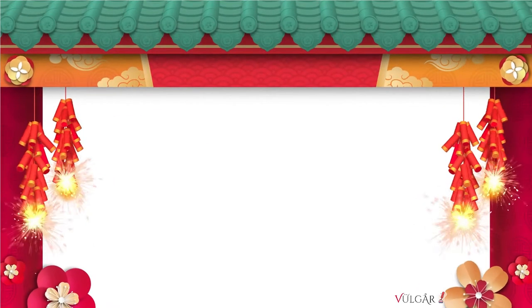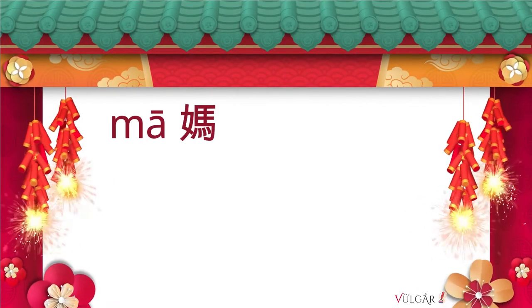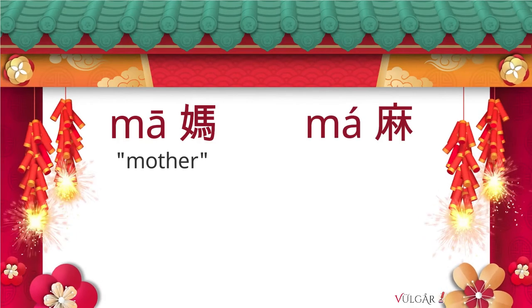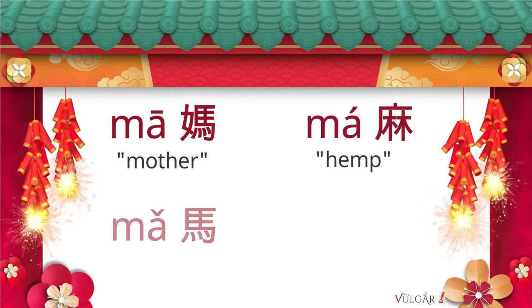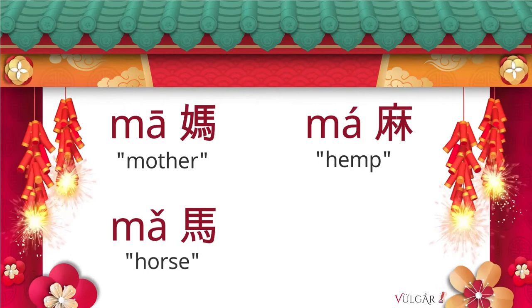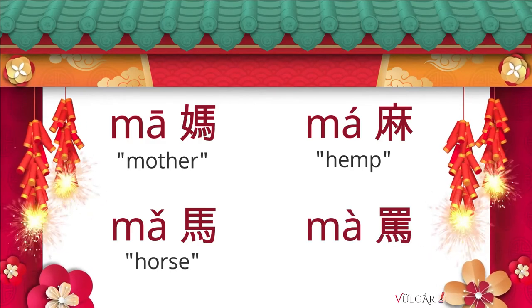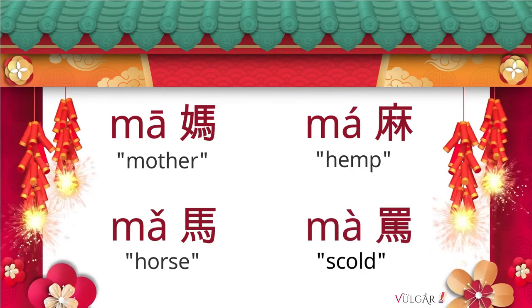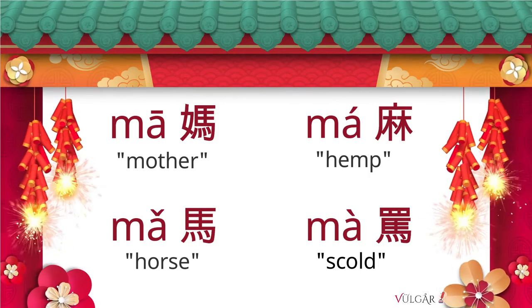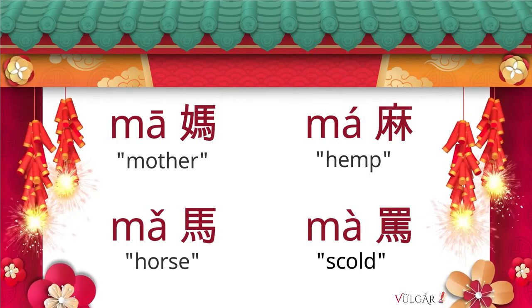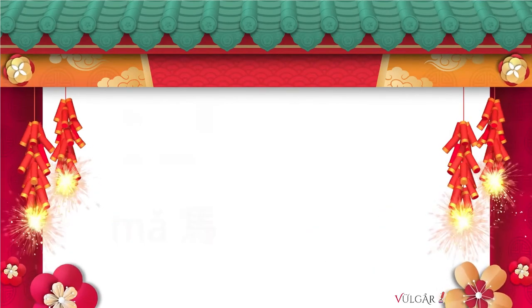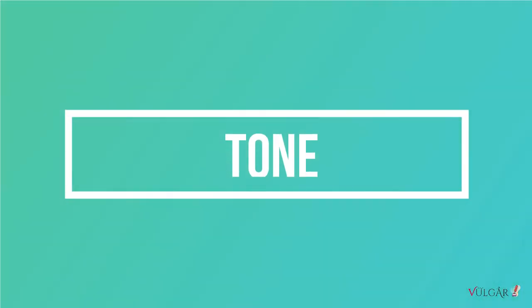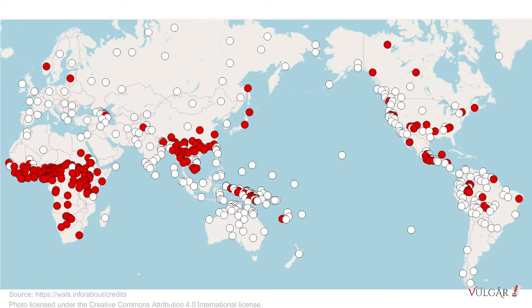In Mandarin Chinese, ma means mother, ma means hemp, ma means horse, and ma means scold. Although each word uses the syllable ma, they all translate to different things because of the pitch of the vowel. This is known as tone, and it's a feature found in about one third of the world's languages, mostly in Africa, Asia, and the Americas.